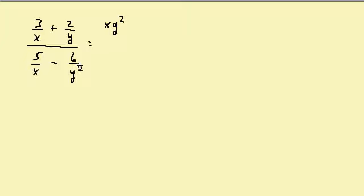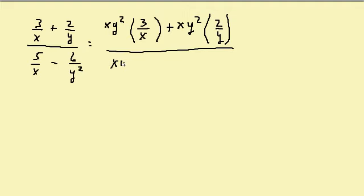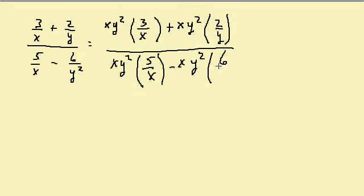So I want to get a common denominator, which would be xy squared, and multiply it to each term. So xy squared times 3/x, plus xy squared times 2/y, over xy squared times 5/x, minus xy squared times 6/y squared. Now the x and the x cancel, and y cancels here so I'm left with y. Here the x's cancel, and here the y squared's cancel.